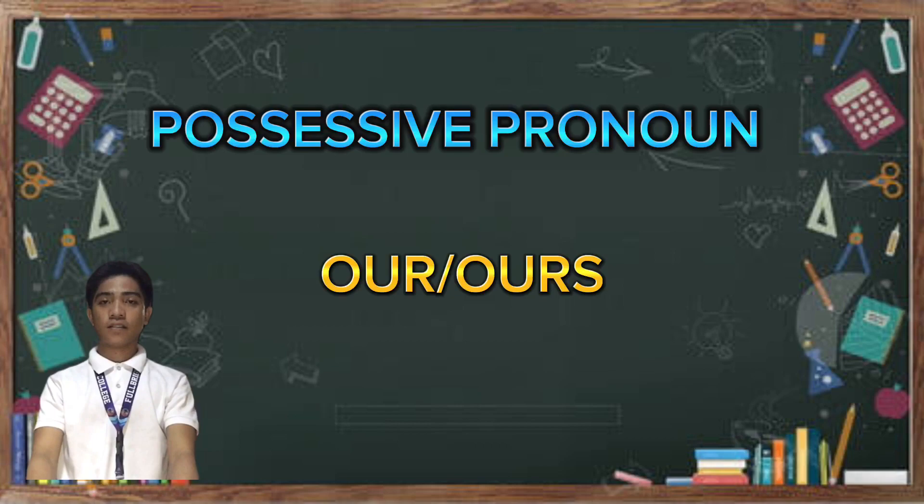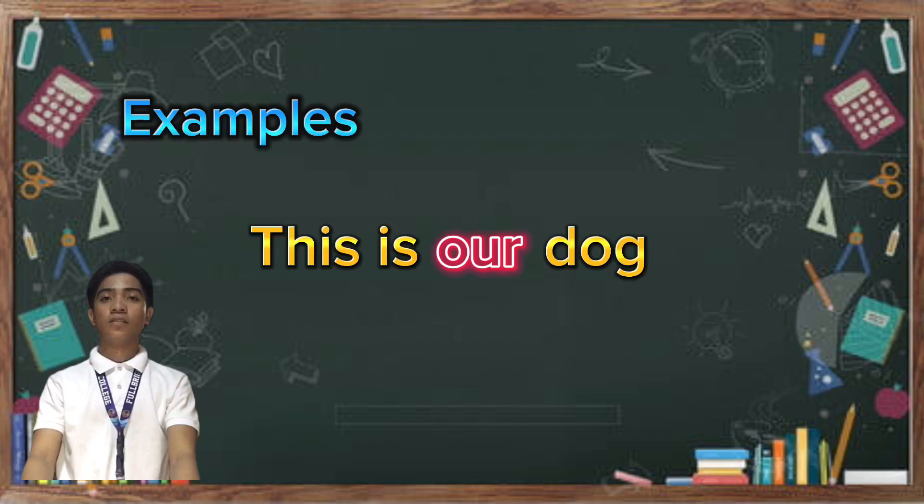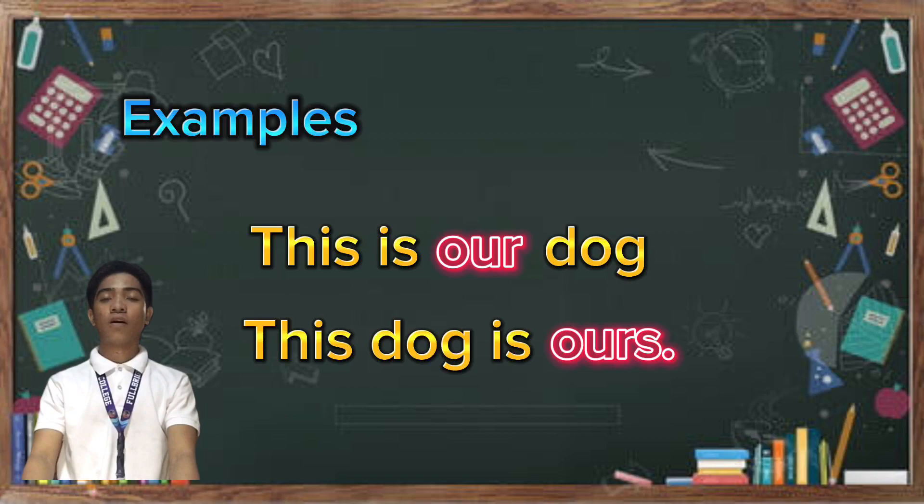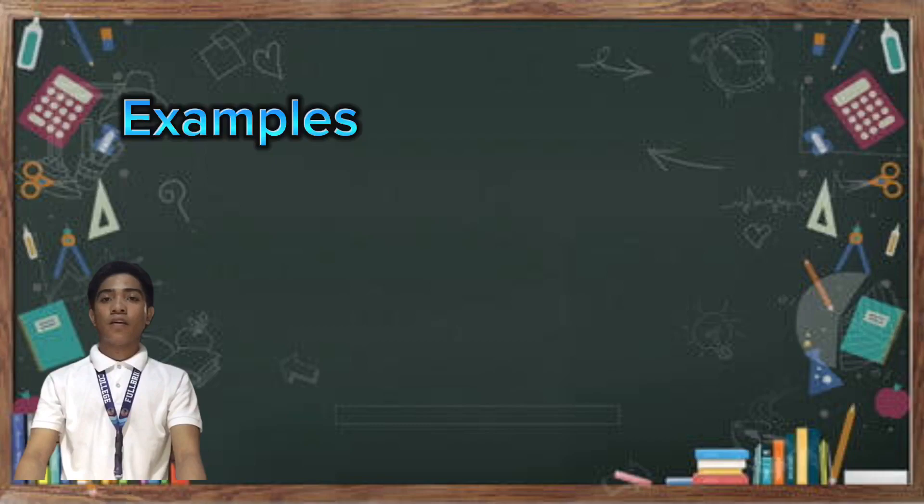In the next example, we are going to use the possessive pronoun 'our' and 'ours.' The first example is: 'This is our dog.' and 'This dog is ours.' In the first example we use 'our,' and in the second example we use 'ours.'